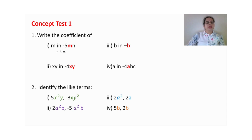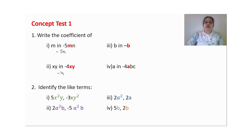For the term with xy, leaving xy aside, the coefficient of xy is minus 4. For the coefficient of b in minus b: leaving b aside, there is no number written, which means the coefficient is 1. So the coefficient of b is minus 1.